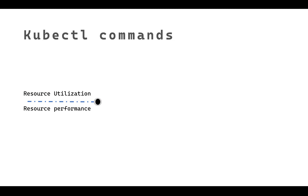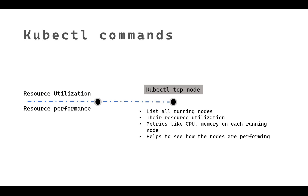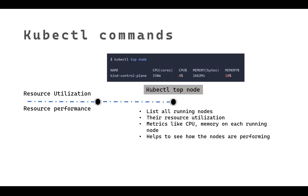A lot of issues in Kubernetes will be because of the utilization of resources, pods, or nodes, and how the pods are configured. The first command we are going to talk about is `kubectl top node`. This command will help you list all the running nodes and also give you the resource utilization — CPUs and memory of each node — so you can see how the nodes are performing.